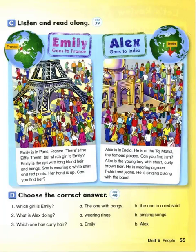Page 55. D. Choose the correct answer. Number 1. Which girl is Emily? Number 2. What is Alex doing? Number 3. Which one has curly hair?